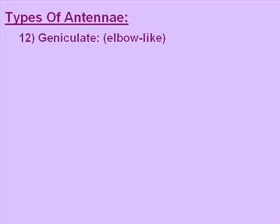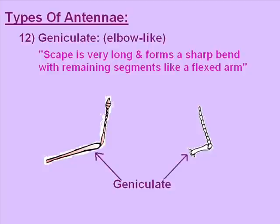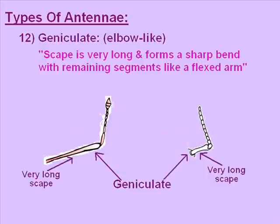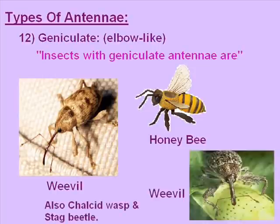The twelfth type is geniculate antenna, meaning elbow-like structure. The scape is very long and forms a sharp bend with the remaining segments, like a flexed arm. We discuss the scape here separately because the scape of geniculate antennae is different from previous types. The pictures show the elbow-like, flexed-arm structure, and the arrow points towards the geniculate antenna. Insects with geniculate antennae are weevils, honeybees, chalcid wasps, and stag beetles.